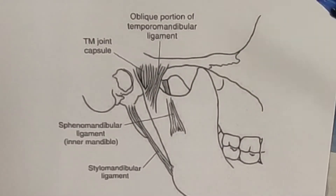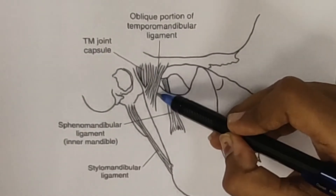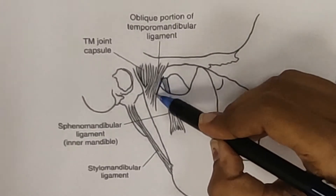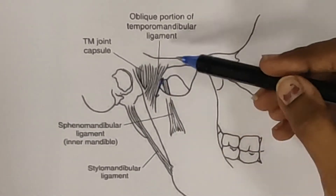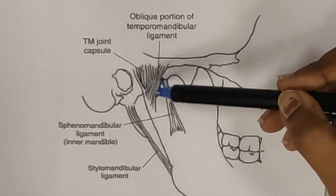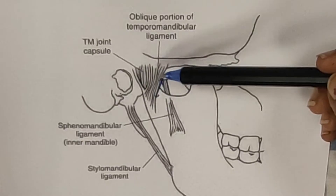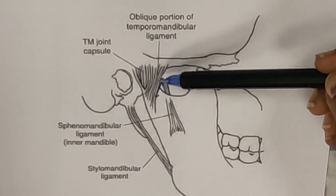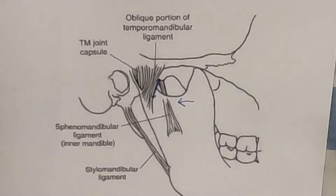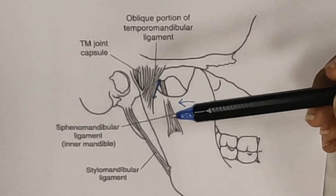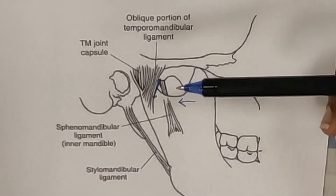The first ligament is the temporomandibular ligament. As the name suggests, its proximal and distal attachments are on the temporal bone and the mandible. What it does is it basically checks excessive posterior movement of the mandible. That is the main function of the temporomandibular ligament.